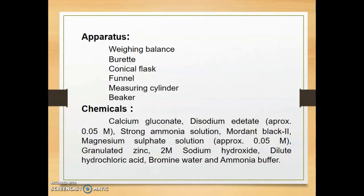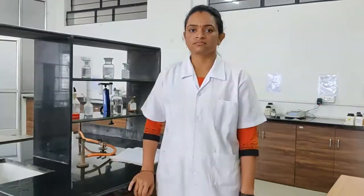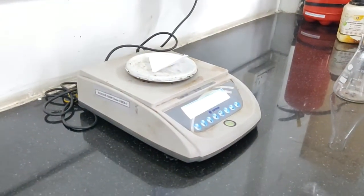So, for the actual procedure, we move towards laboratory. Welcome in pharmaceutical chemistry first laboratory. Today we are going to deal with assay of calcium gluconate. In previous session, we already discussed principle, reaction, then factor, apparatus and chemicals which are required for assay. So, in this session, we are moving towards the procedure for the assay. So, let's start with standardization.